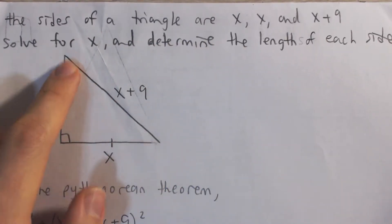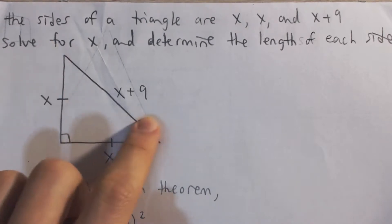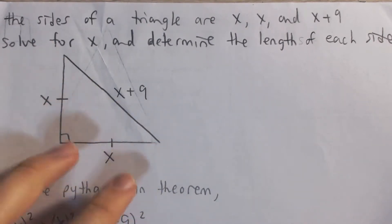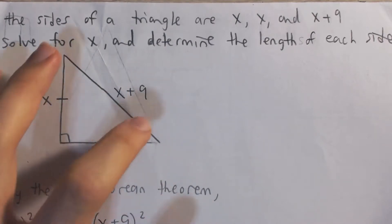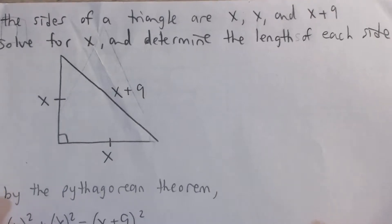So as you can see, we have a right triangle with lengths x and x. Those are the same lengths, so we know it's isosceles. And x plus 9, it's 9 greater than x. That's going to be our hypotenuse. The hypotenuse is the longest side.